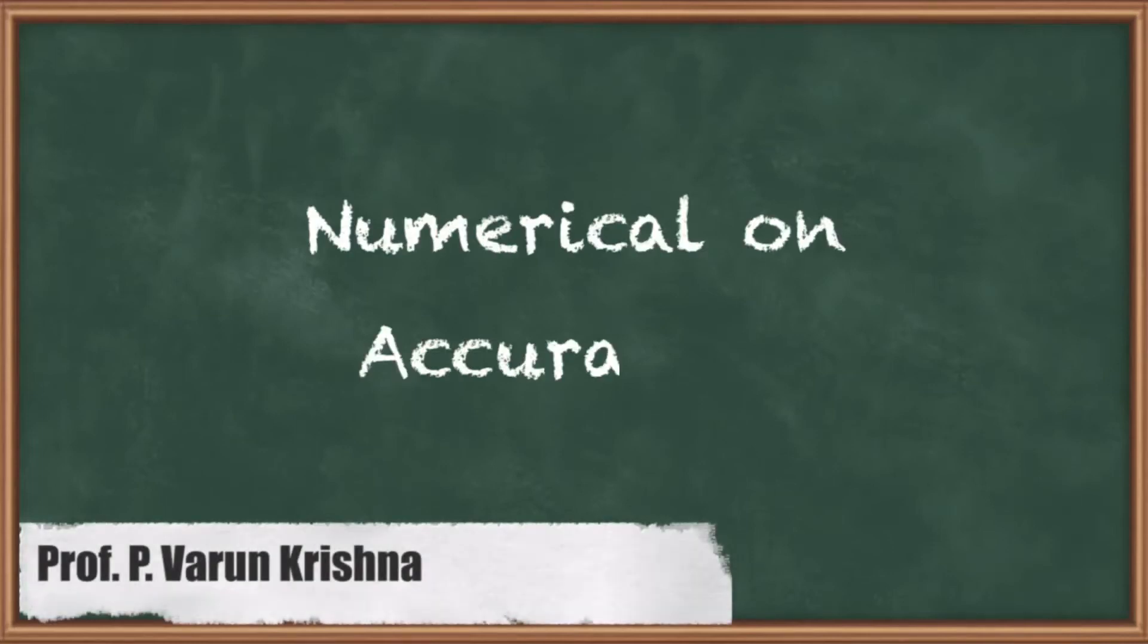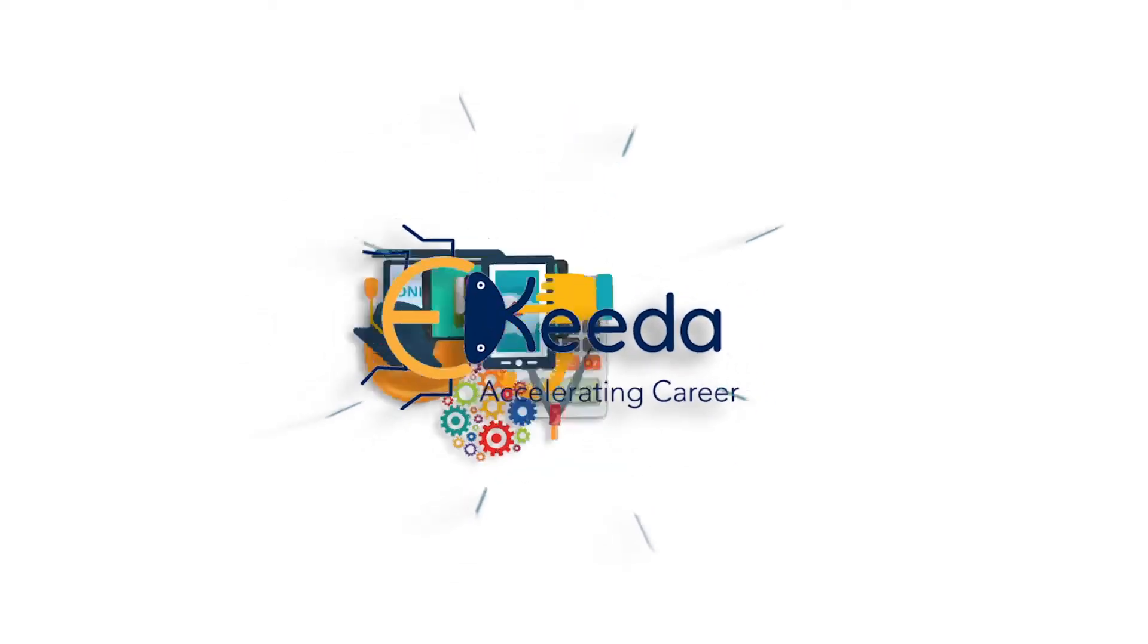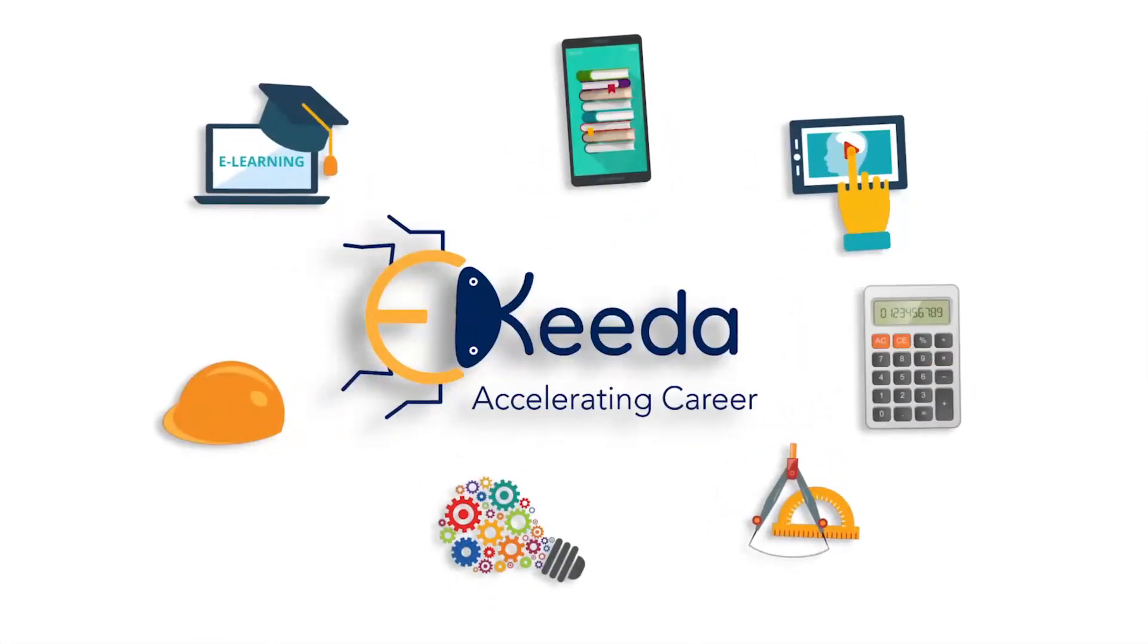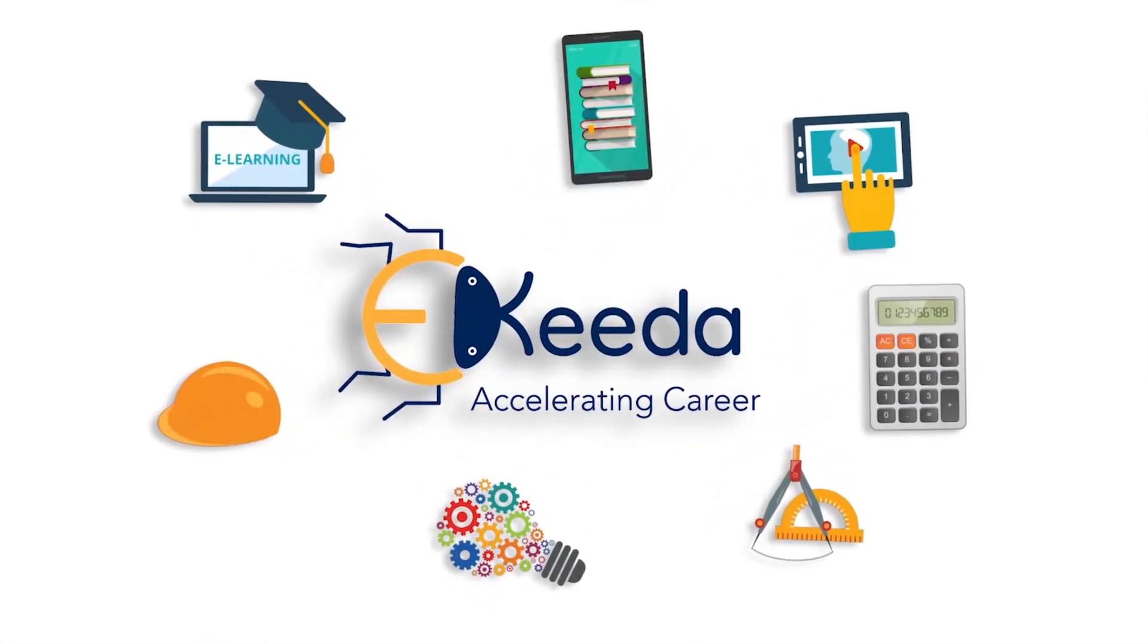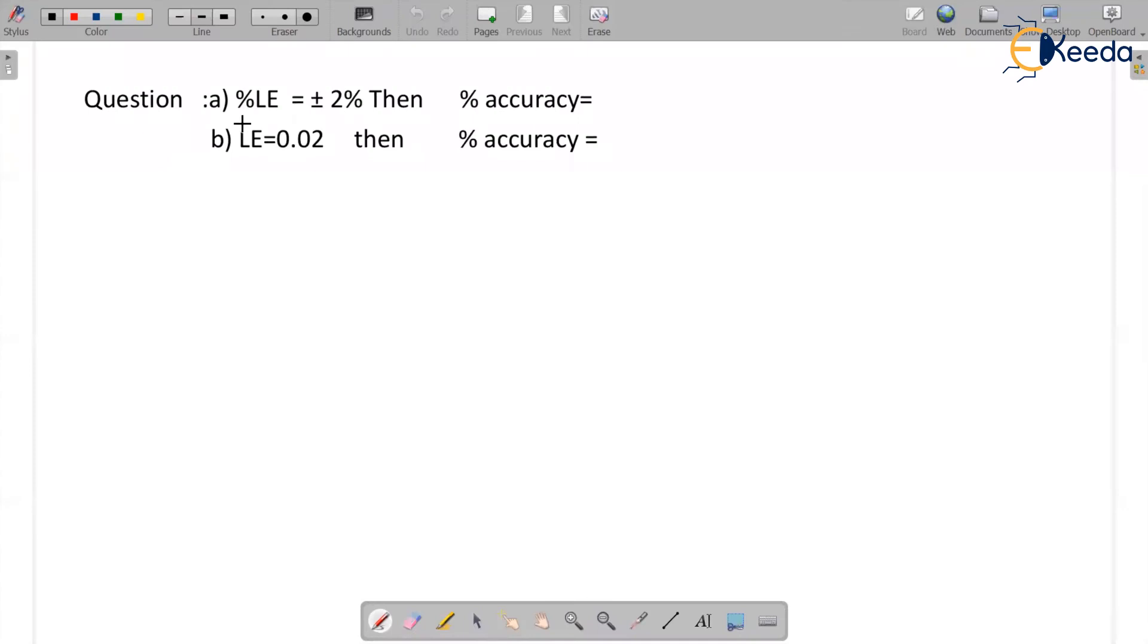Hi students, presently I am going to teach a numerical on accuracy. Okay, now percentage limiting error is equal to plus or minus 2%, then percentage accuracy.